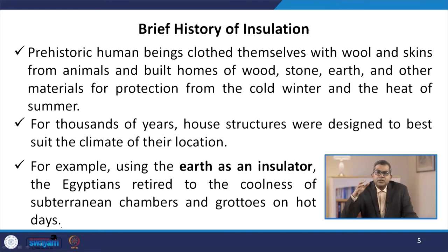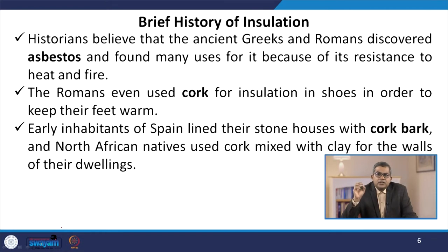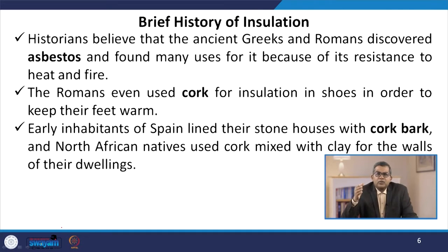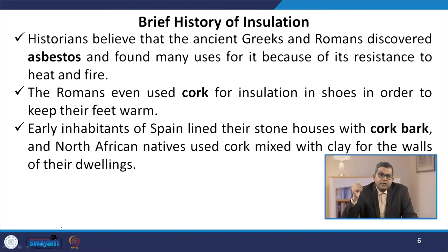For example, using the earth as an insulator, the Egyptians retired to the coolness of subterranean chambers and grottoes on hot days. Historians believe that the ancient Greeks and Romans discovered asbestos and found many uses for it because of its resistance to heat and fire. The Romans even used cork for insulation in shoes in order to keep their feet warm.